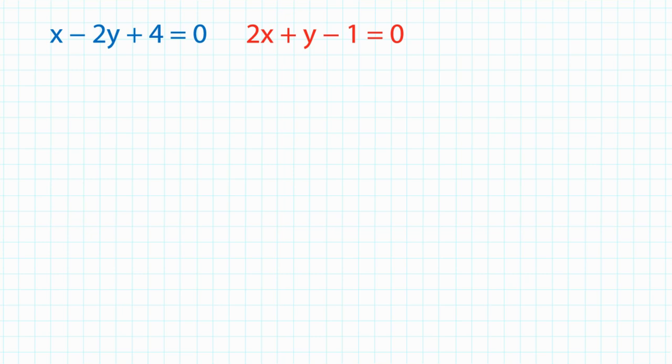First, I will substitute the coordinates of the intersections to obtain x1 minus 2y1 plus 4 is equal to 0, 2x1 plus y1 minus 1 is equal to 0.